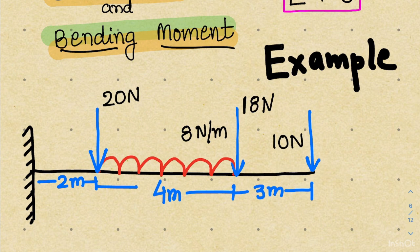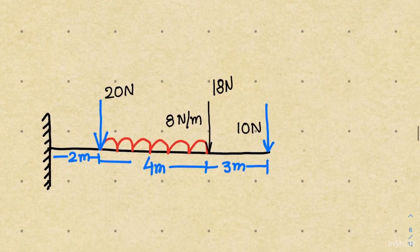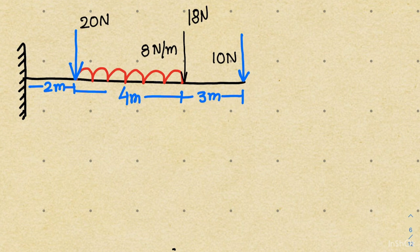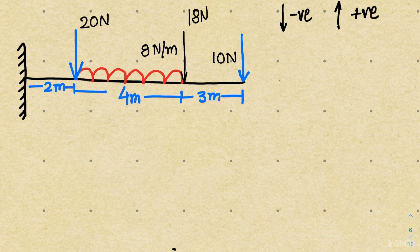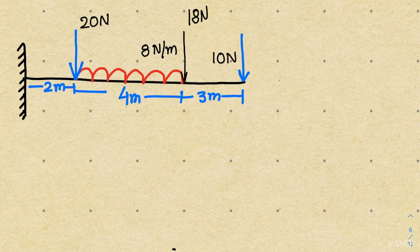Here we have a cantilever beam with three point loads: 20 newton, 18 newton, and 10 newton, and a uniformly distributed load of intensity 8 newton per meter. That is the problem statement. Sign conventions: if the load is downward, shear force is negative; if upward, shear force is positive. For bending moment, clockwise moment is negative and counterclockwise is positive. We will first make the shear force diagram, then the bending moment diagram.